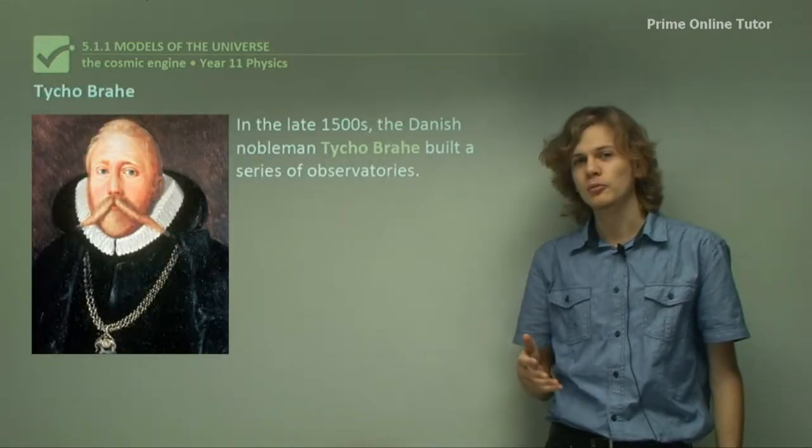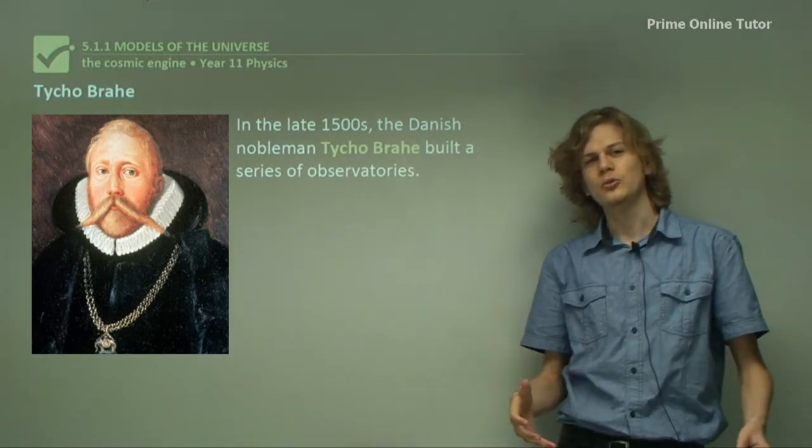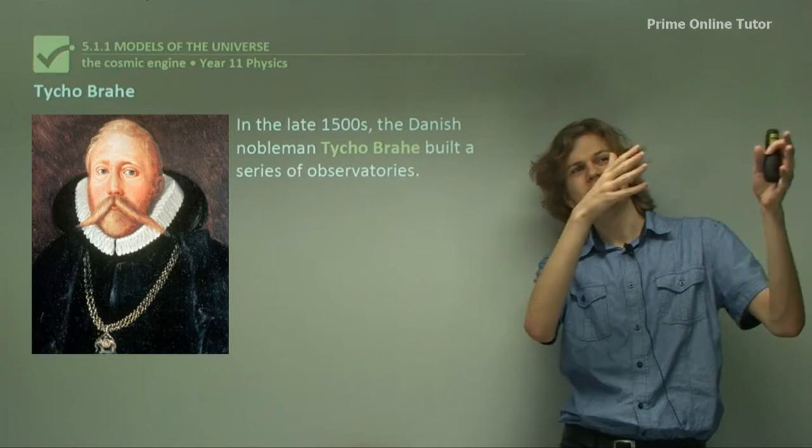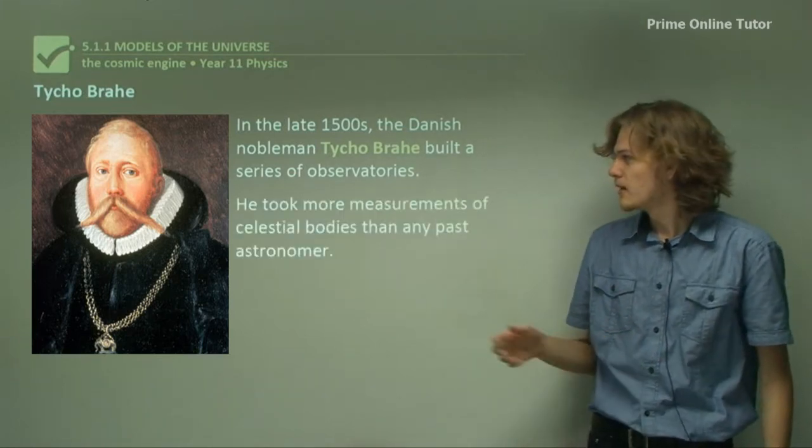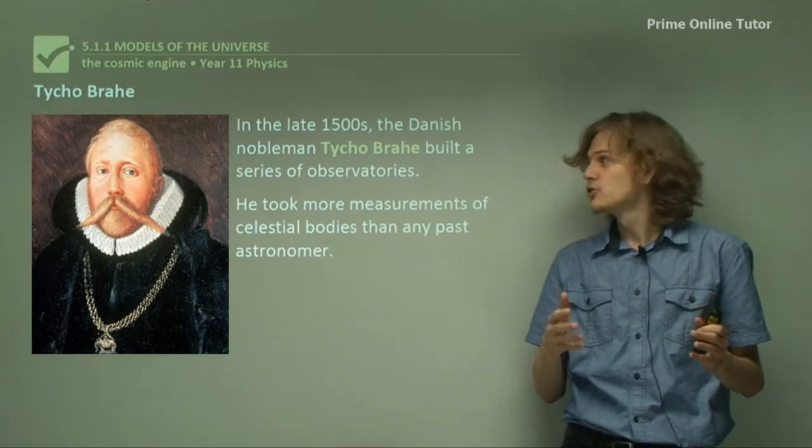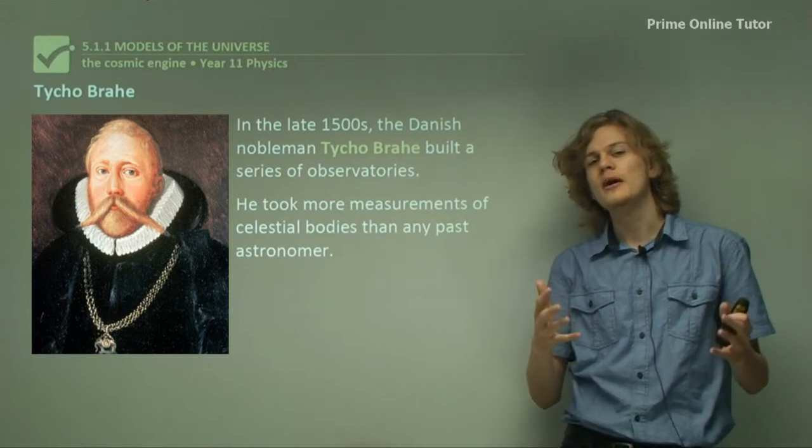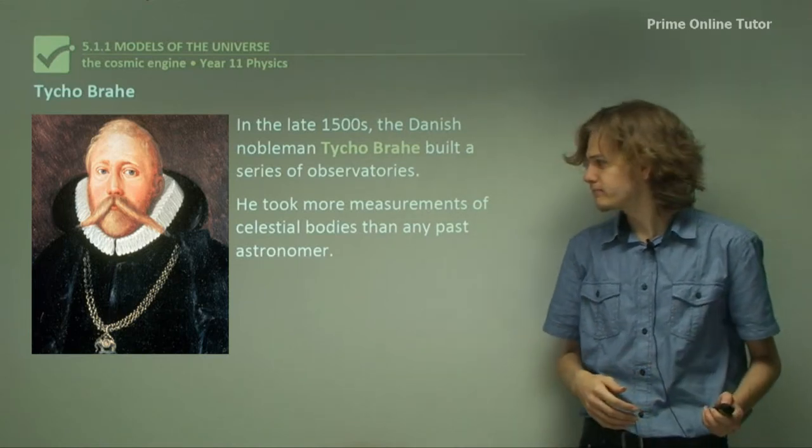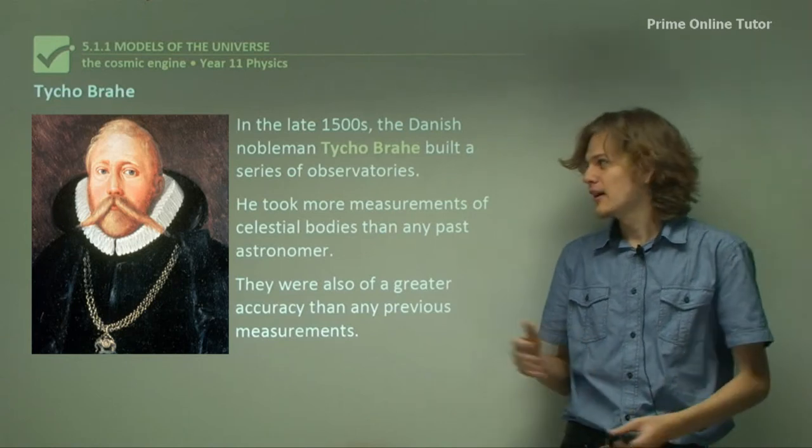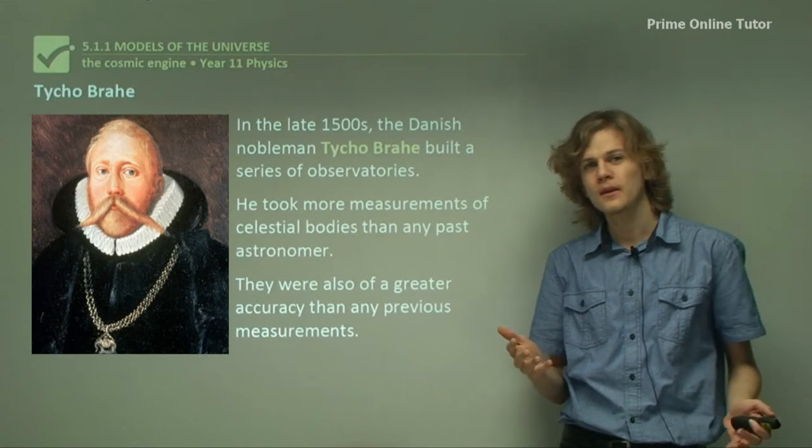Now, in the late 1500s, the Danish nobleman Tycho Brahe built a series of observatories. Back in those days, they didn't have telescopes, so they had to sit back in the observatory and look up at the sky through a special window and study exactly the locations of the stars very carefully. They took more measurements of celestial bodies than any other astronomer before him. In the late 1500s, the early 17th century, Tycho Brahe had the largest database in the world of astronomical data. They also had greater accuracy than any other astronomer before him. So this guy had a wealth of information.